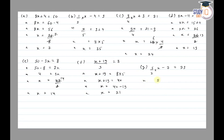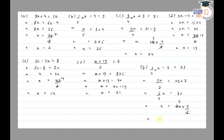So 5x by 2 equals — shifting 7 to the other side, the sign changes to plus 7: 5x by 2 is equal to 23 plus 7 equals 30. Then x is equal to 30 multiplied by the inverse of 5/2, which is 2/5. So 5 and 30 cancel: 30 divided by 5 is 6, so x is equal to 6 into 2, which gives x is equal to 12.